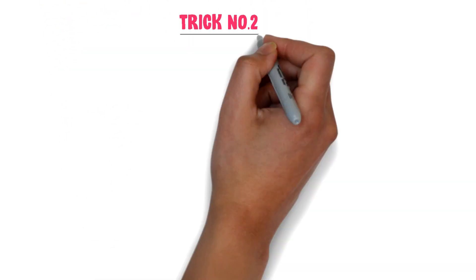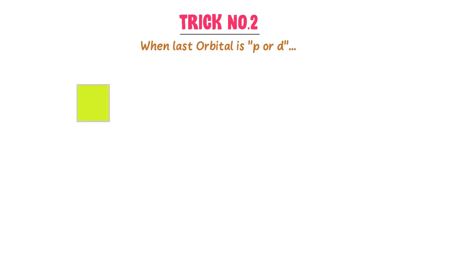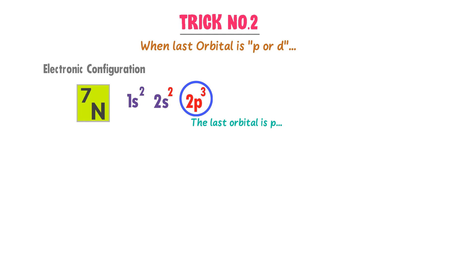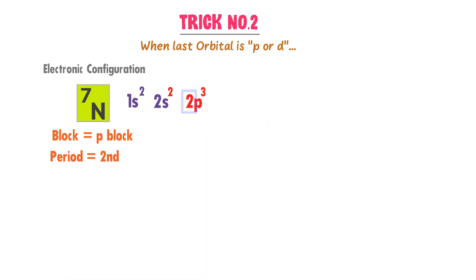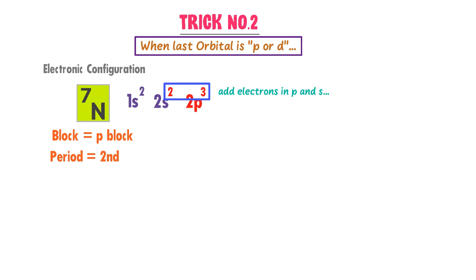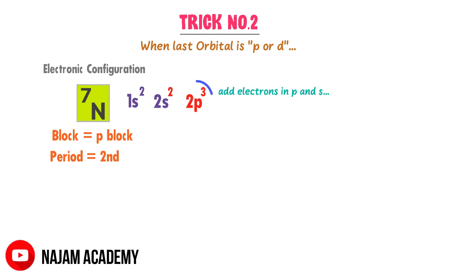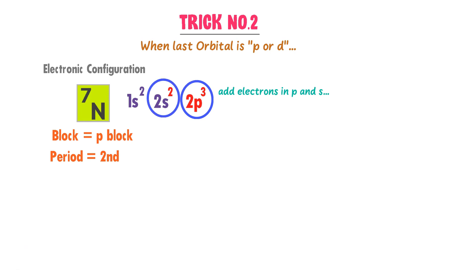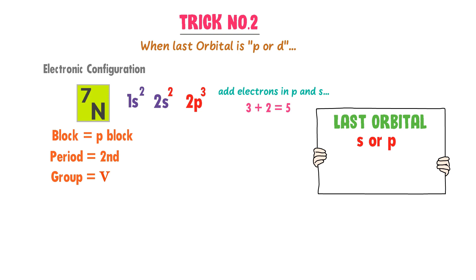Now let me teach you the second trick: when the last orbital is P. For example, consider nitrogen — its atomic number is 7. The electronic configuration of nitrogen is 1s2, 2s2 and 2p3. The last electron of nitrogen is in the P orbital, so the block of nitrogen is P. The highest principal quantum number is 2, so the period of nitrogen is second. When the last orbital is P, always add the electrons in the P and S orbitals to get the group number. There are three electrons in the P orbital and two electrons in the S orbital — 3 plus 2 is equal to 5, so nitrogen is in the fifth group. Since the last orbital is P, its subgroup will always be A, so nitrogen is present in the fifth A group.